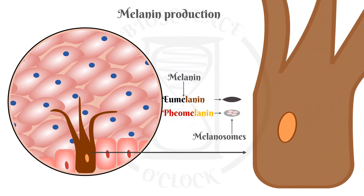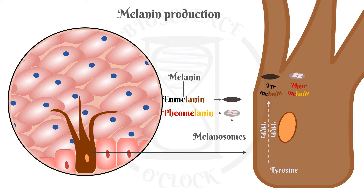The first step in the synthesis of both types of melanin is the hydroxylation of the tyrosine amino acid. The subsequent reactions are different. The synthesis of eumelanin involves the enzymes tyrosinase-related protein 1 and 2, or TRP1 and TRP2. Pheomelanin synthesis depends on the availability of the cysteine amino acid.